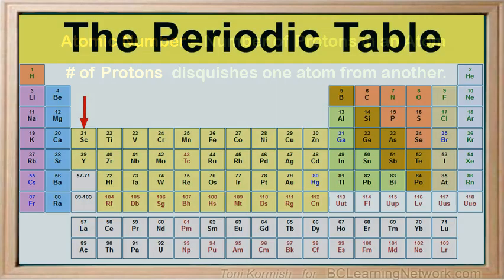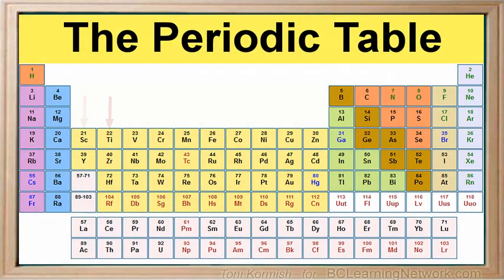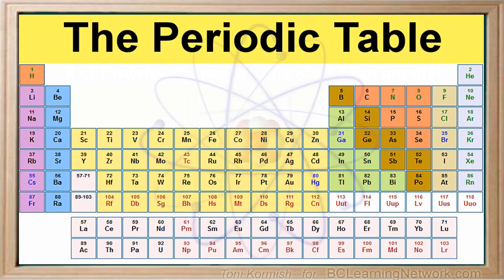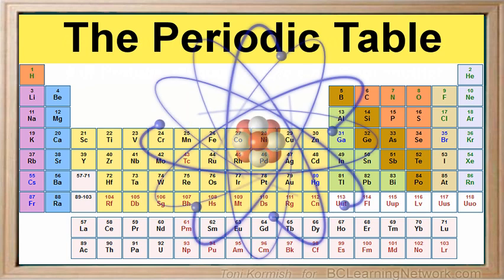Notice that as the atomic number, or number of protons, in an atom changes, so does the atom. The atomic number also tells us how many electrons, or negative charges, are orbiting the nucleus of a neutral atom.